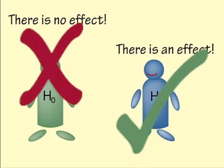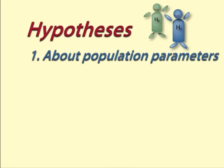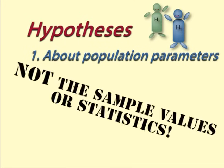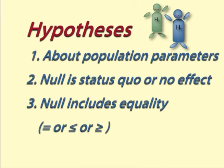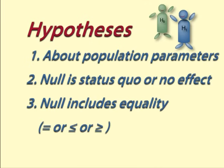The alternative hypothesis is usually the thing we are trying to prove or find out about, while the null hypothesis is the opposite, or status quo. Note: 1. The hypotheses are always about the population parameters, not the sample values or statistics. 2. The null hypothesis usually refers to the status quo, the thing we are trying to find evidence against — it generally represents no effect. 3. The null hypothesis should include a statement of equality, and the alternative should not.